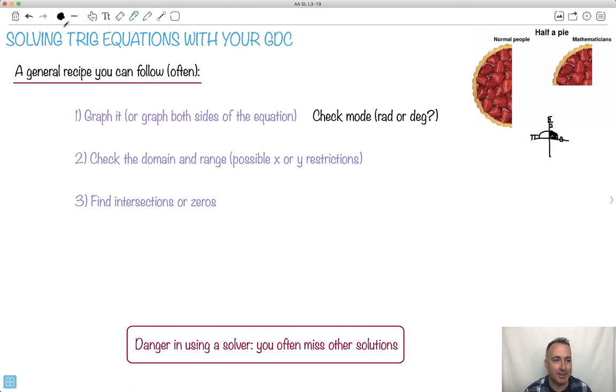So let's look at this. How can we solve trig equations with our calculator? One generic way to do it is just to follow this. It's not exact, but very often I'll just graph it. If there's one thing to graph where we're finding zeros, I would just graph the equation. If I've got an equation where there's different things on both sides, I would graph both sides of the equation separately. Make sure you check for your mode. Should you be in radians or degrees, that's an important one. Make sure you check the domain and range because maybe they give you some restrictions on your x's and y's.